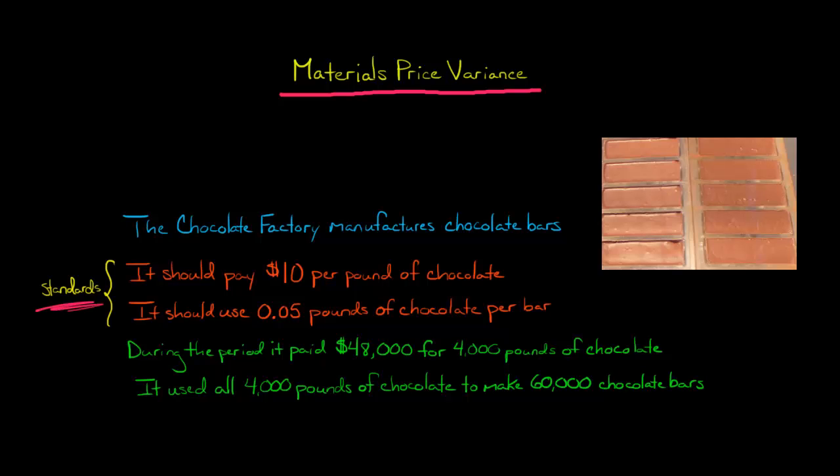They've got some standards that have been set by management. They believe that they should pay $10 per pound when they're acquiring chocolate, and that they should use 0.05 pounds to make one chocolate bar.